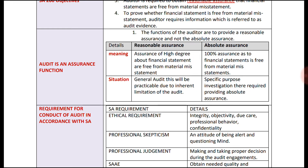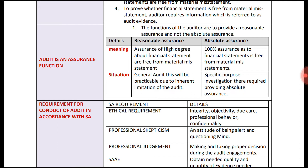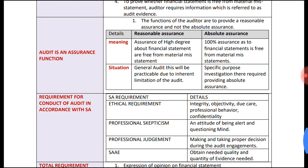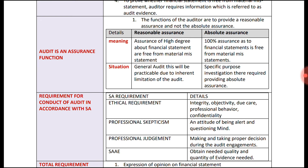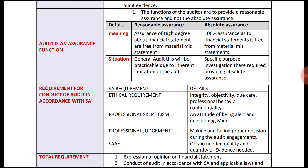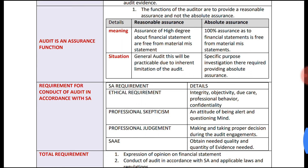Reasonable assurance means assurance of a high degree that the financial statements are free from material misstatement. In reasonable assurance, the auditor gives a high degree of assurance. However, in absolute assurance, 100 percent assurance is given that the financial statements are free from material misstatement.